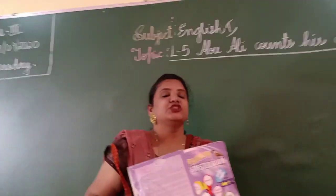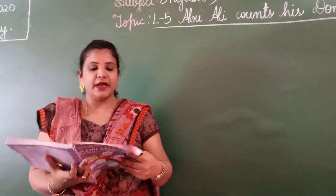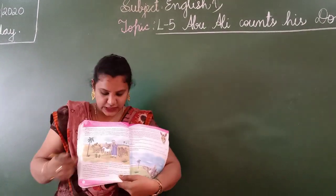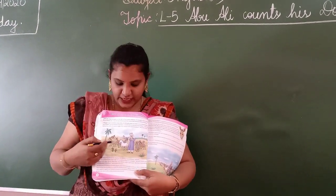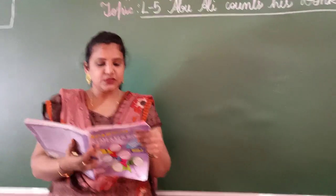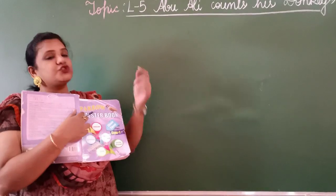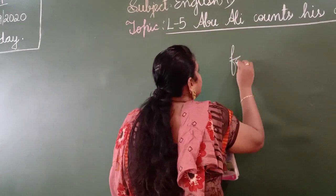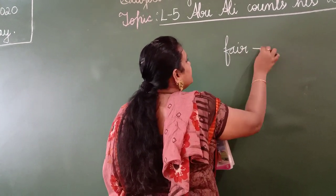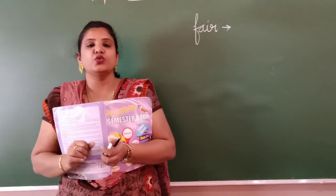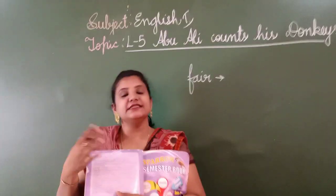So what happens here children? There is a traveller by the name Abu Ali. He is Abu Ali and these are his donkeys. He goes to a fair to buy some donkeys. Fair is a place where you buy things, or where you buy and sell goods.